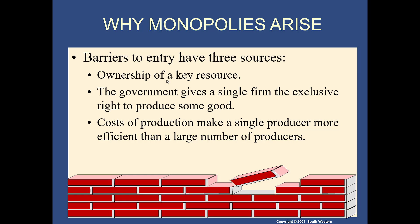The government gives a single firm exclusive rights to produce some goods. In some countries, especially small ones, back in the day they gave exclusive rights to one company for telecommunications or utilities. If the government feels it's in the best interest of the country to give one firm the right to produce a certain good at a certain cost, that's another way a monopoly is formed. Cost of production can also make a single producer more efficient — one firm already established makes it very difficult for new entrants.